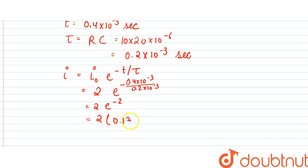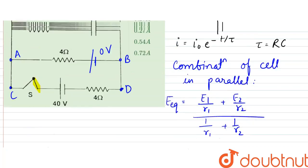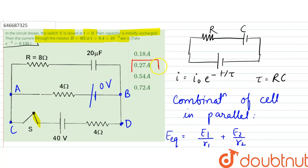which is equal to 2 into e power minus 2. So e power minus 2 is given as 0.135 here. So 2 into 0.135 is equal to 0.270 amperes. So our answer would be 0.27 amperes, that is option B. Thank you.